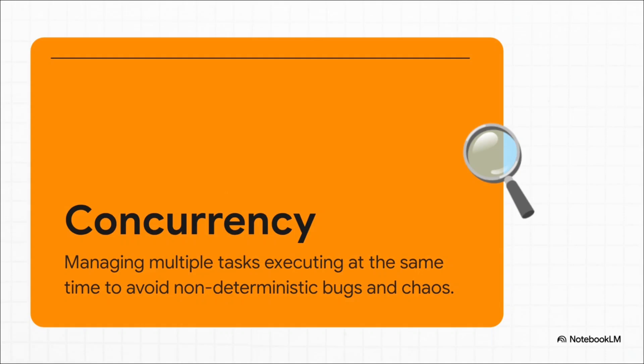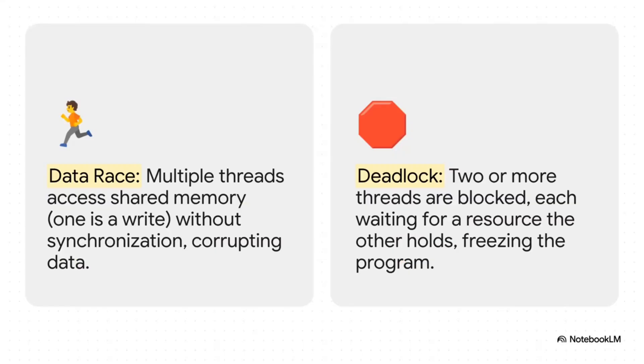And then there's the other big monster: concurrency. It's like being a master juggler. Modern software needs to do a million things at once, and concurrency is all about keeping all those balls in the air without dropping any. It's incredibly powerful, but it is so easy to mess up. And when that juggling act fails, you end up with two total nightmares.